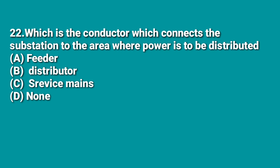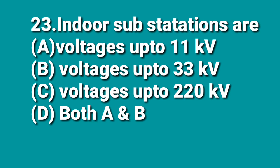The next question: which conductor connects the substation to the area where power is to be distributed? The answer is feeder — the conductor that carries power from a distribution substation to the distributor is a feeder. The following question: indoor substations are used up to which voltage? Indoor substations are used up to 33 kV; substations more than 66 kV may have insulation problems, so B (up to 33 kV) is the correct answer.